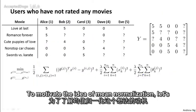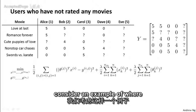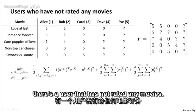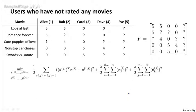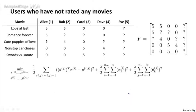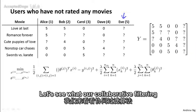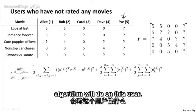To motivate the idea of mean normalization, let's consider an example of where there's a user that has not rated any movies. So, in addition to our four users, Alice, Bob, Karen, and Dave, I've added a fifth user, Eve, who hasn't rated any movies. Let's see what our collaborative filtering algorithm will do on this user.